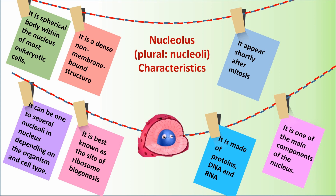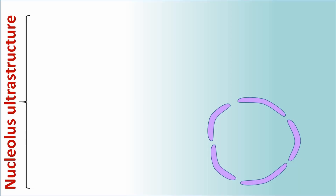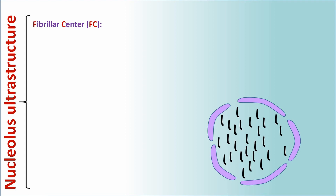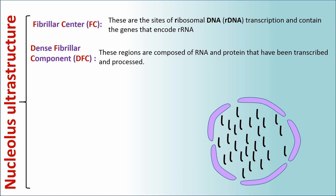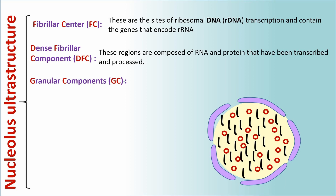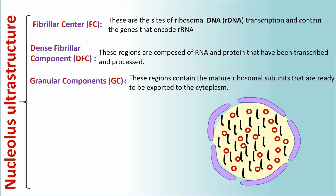The Nucleolus is one of the main components of the nucleus. Nucleolus ultrastructure: the Nucleolus has three parts in its ultrastructure. The first part is the fibrillar center or FC — these are the sites of ribosomal DNA (rDNA) transcription and contain the genes that encode RNA. The second part is the dense fibrillar component or DFC — these regions are composed of RNA and protein that have been transcribed and processed. The third part is granular components or GC — these regions contain the mature ribosomal subunits that are ready to be exported to the cytoplasm.